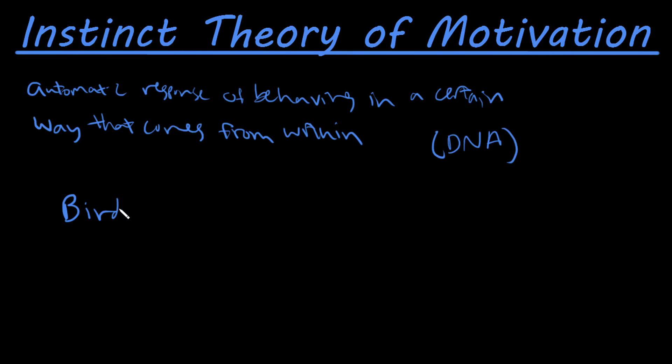For example, a bird building a nest. This is something that helps them survive. The bird is born knowing how to do this. They don't have to learn it from anyone. It helps them survive, which is why it's in their DNA and it's passed on. That's what the instinct theory of motivation says. Why are these birds building a nest? Because it helps them survive and this is the behavior they're exhibiting. It's not something that needs to be learned.